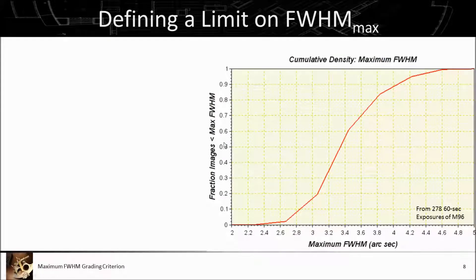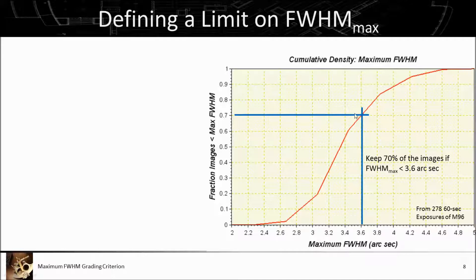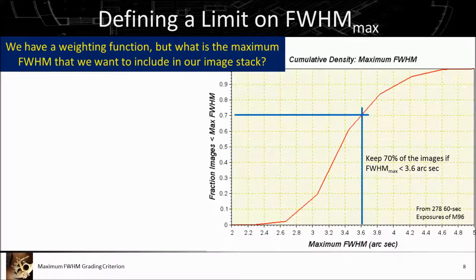What's our limit on the FWHM? Well, that's a tough one. If I selected 3.6 arc seconds as my approval limit, I'd throw out any image with a higher maximum FWHM than that and keep all the others. This curve tells me I would keep about 70% of my images with that limit. But there are a number of factors that go into how we want to select the limit.